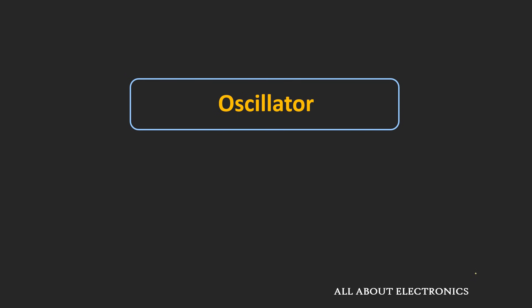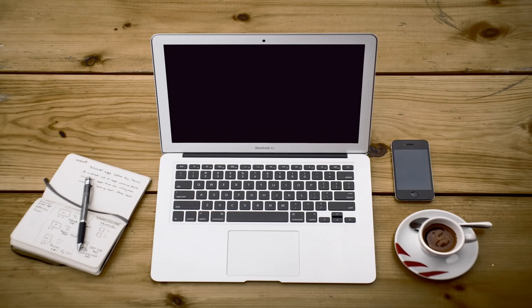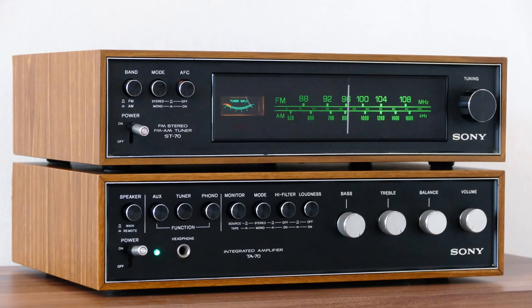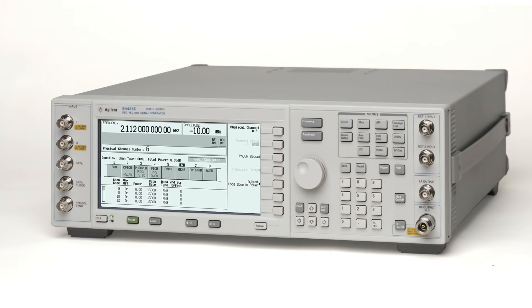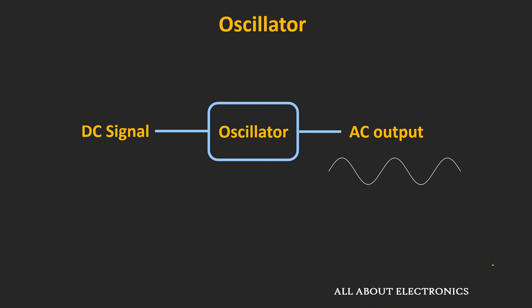The electronic oscillators are used in a wide range of applications. They are used in laptop and smartphone processors for generating clock signals, while they are used in radio and mobile receivers for generating the local carrier frequency. They are even used in signal generators in the lab to test circuits. This oscillator accepts DC voltage and generates a periodic AC signal of the desired frequency.